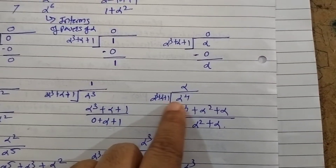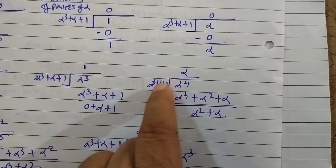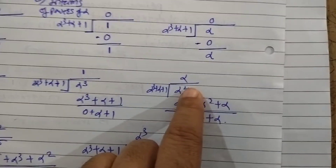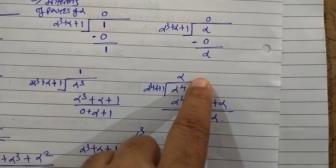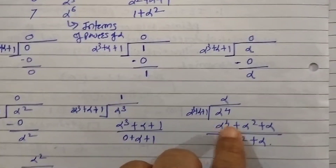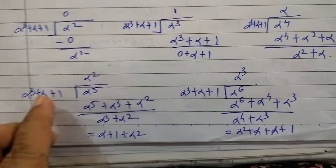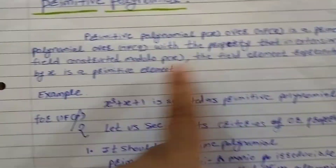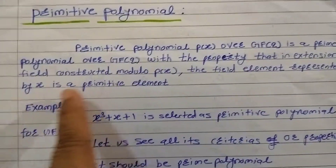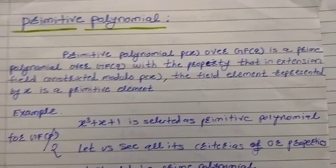For α⁴: dividing α⁴ by α³+α+1, the divisor term is α (since α⁴ ÷ α³ = α), so α⁴ mod (α³+α+1) = α²+α. Likewise, all remaining elements can be obtained. The definition states that in the extension field constructed modulo p(x), the element represented by x is a primitive element — that is why we replaced x with α. I hope you understood this definition. Thank you.